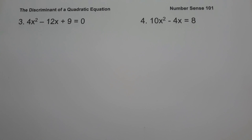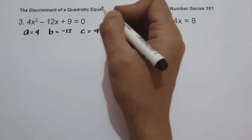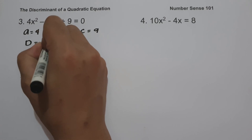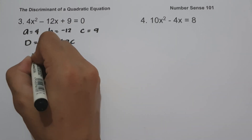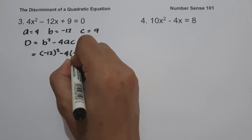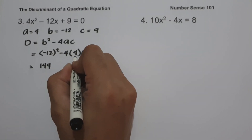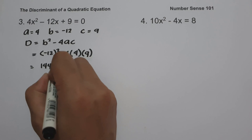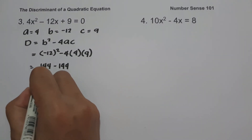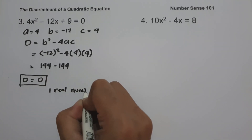On example number three, we have 4x squared minus 12x plus 9 equals 0. We identify A as 4, B as negative 12, and C as 9. The formula for the discriminant is D equals B squared minus 4AC. Substituting: negative 12 squared minus 4 times 4 times 9. Negative 12 squared is 144; negative 4 times 4 is negative 16; negative 16 multiplied by 9 is negative 144. And 144 minus 144 equals 0. Since the discriminant is equal to 0, that means we have one real number solution.